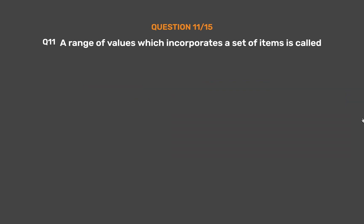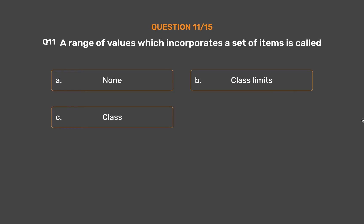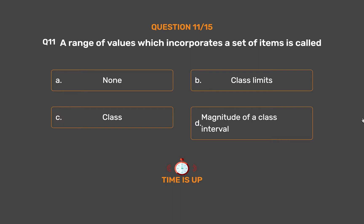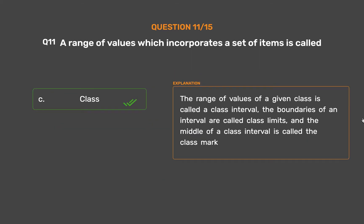Question number 11. A range of values which incorporates a set of items is called: Option A: None. Option B: Class limits. Option C: Class. Option D: Magnitude of a class interval. The correct answer is Option C: Class. The range of values of a given class is called a class interval. The boundaries of an interval are called class limits. And the middle of a class interval is called the class mark.